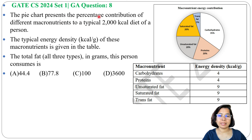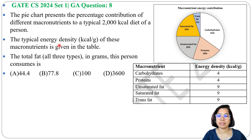The pie chart presents the percentage contribution of different macronutrients to a typical 2000 kilocalorie diet of a person. This is the pie chart. The total energy density of each macronutrient is given in the table. The question asks for the total fat — all three types — in grams, and four options are given.